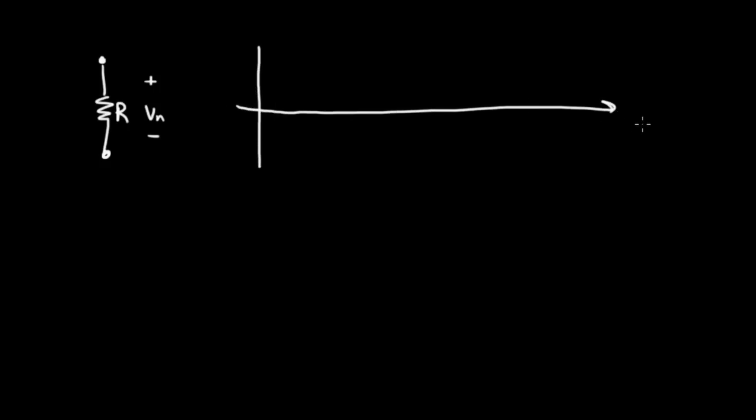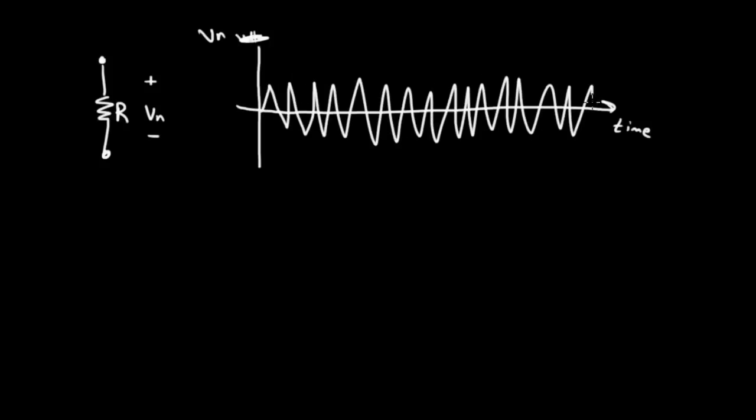So here the x-axis is time and the y-axis is voltage, Vn. What you would see is something like this. It would just be bouncing around over time.